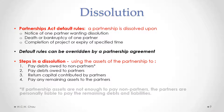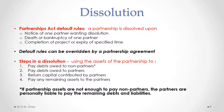After returning contributed capital, if money still remains, any remaining assets are paid to the partners based on their agreed split, or equally under the Partnerships Act default if no agreement exists. If partnership assets are not enough to pay debts owed to non-partners, the partners are personally liable to pay the remaining debts and liabilities — because the partners and the partnership are one and the same.